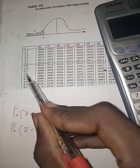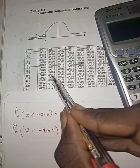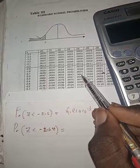Minus 2.6 under 4, I have 0.0041. Now let me confirm that with the calculator.